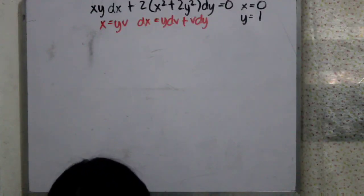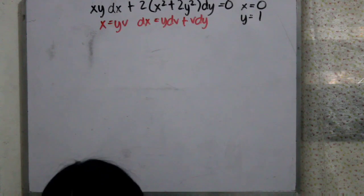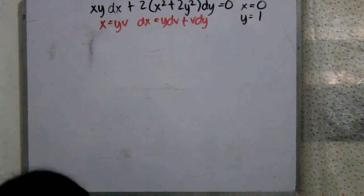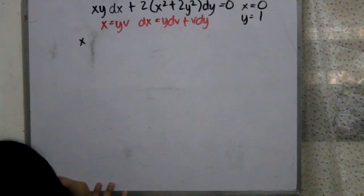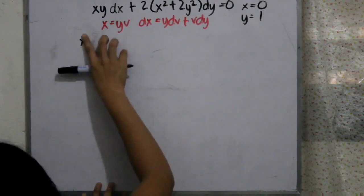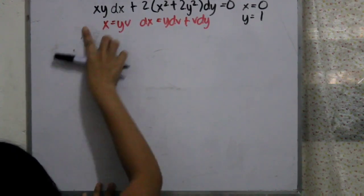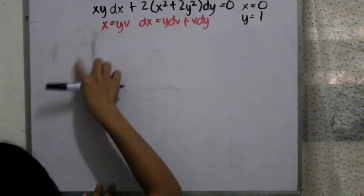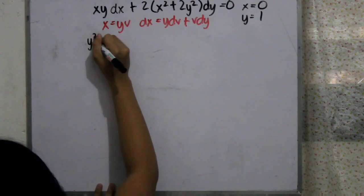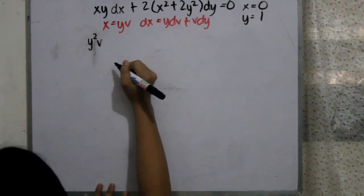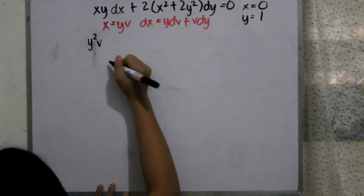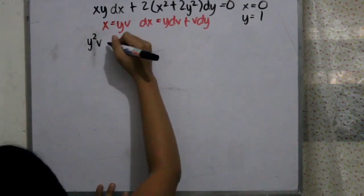Today we will have a homogeneous differential equation. We are given that x equals 0 and y equals 1. We let x equal y·v, and the differential of x equals y·dv plus v·dy.